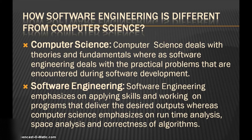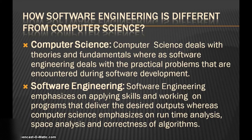How is software engineering different from computer science? Computer science deals with theories and fundamentals, whereas software engineering deals with practical problems encountered during software development. Software engineering emphasizes applying skills and working on programs that deliver desired outputs, whereas computer science emphasizes runtime analysis, space analysis and correctness of algorithms. To be a software engineer, some knowledge of computer science is required, in the same way that some knowledge of physics is required for electrical engineering.